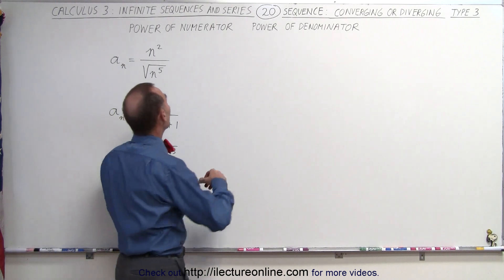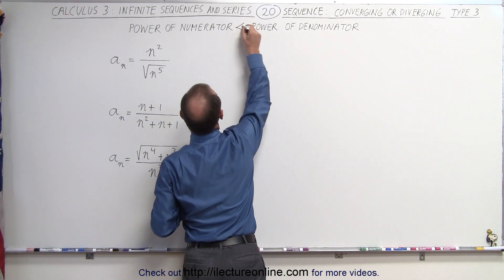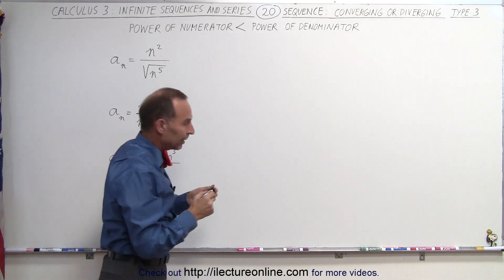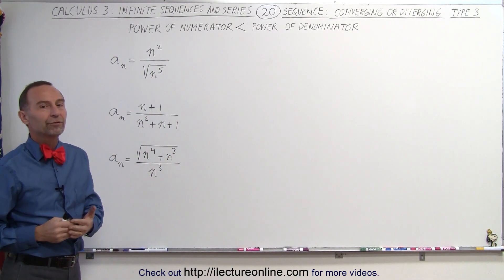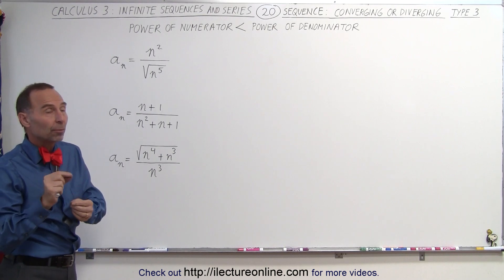So in this case, the power in the numerator is going to be smaller than the power of the denominator. In that case, the sequence will always converge, and it will converge to the number zero.